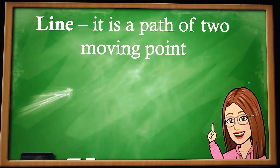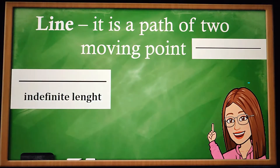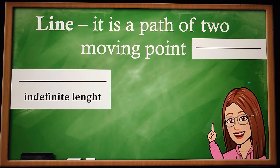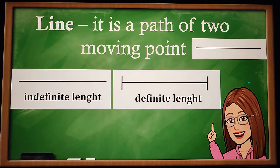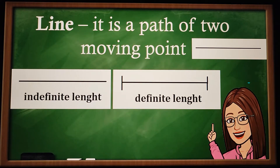What is a line? It is a path of two moving points. A line with indefinite length is a continuous line, while a line with definite length has an exact measurement.